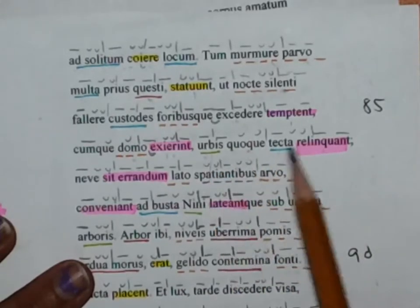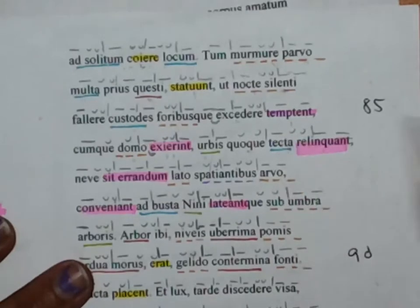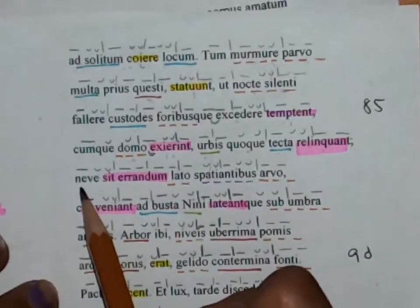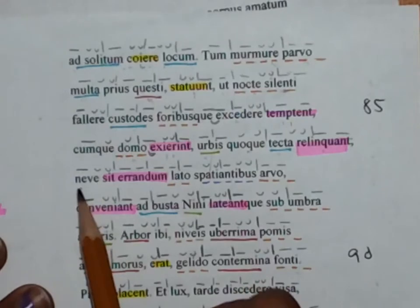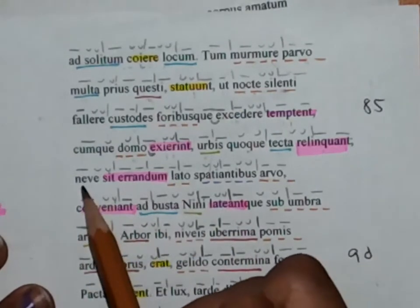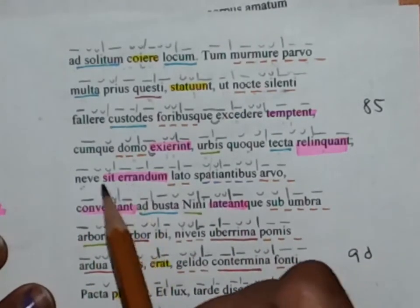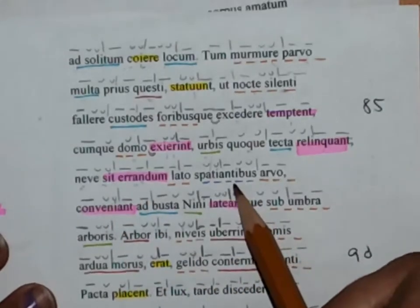Of the city. So this, I believe, is part of this result clause. Now we have a purpose clause being introduced: in order that they not be wandering in the...